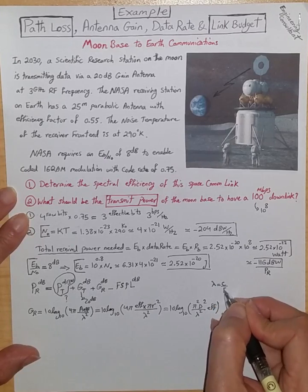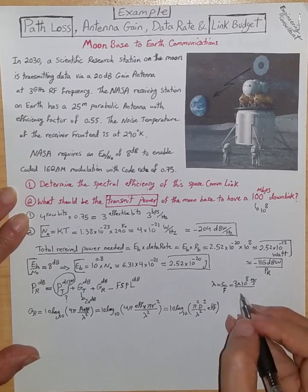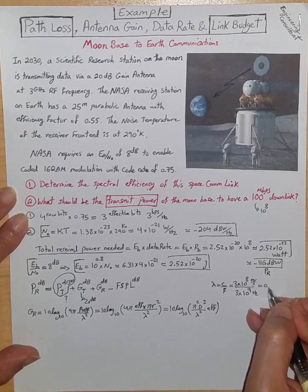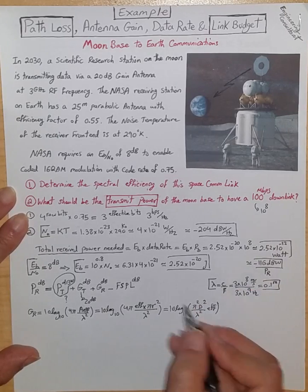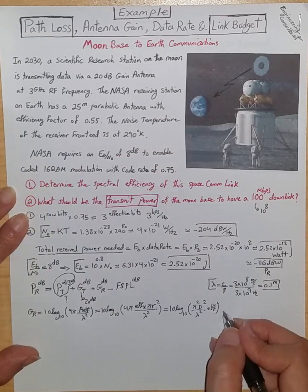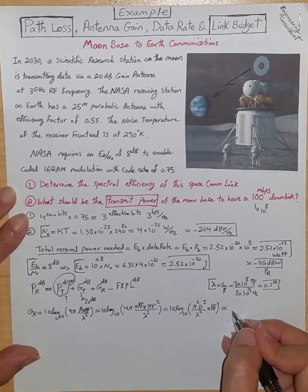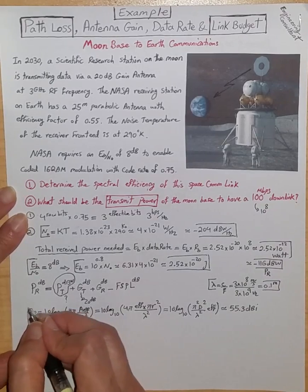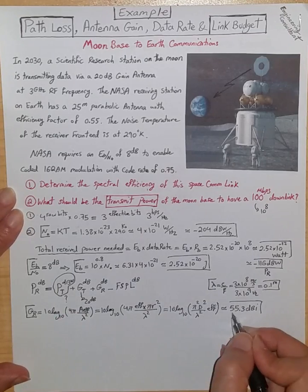Okay, so if I put lambda 0.1 meter, d 25 meter, and efficiency factor of the receive antenna 0.55, then this becomes roughly 55.3 dBi for the receiver antenna gain.